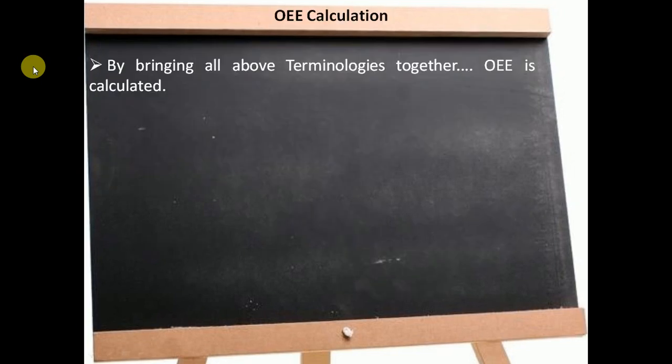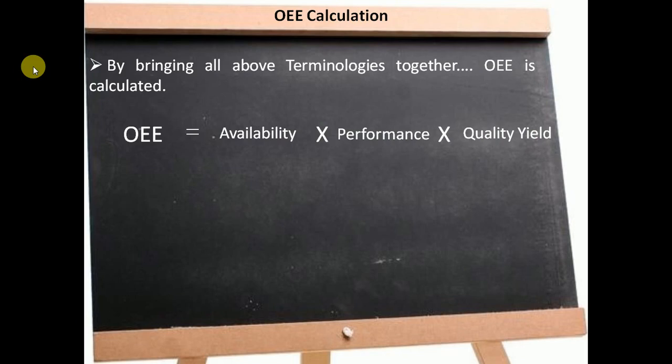By bringing all terminologies together, we can calculate OEE as the product of availability multiplied by performance multiplied by quality yield. These are the criteria in which OEE breaks the performance of a manufacturing unit into three separate measurable components. Each component points to an aspect of the process that can be targeted for improvement.